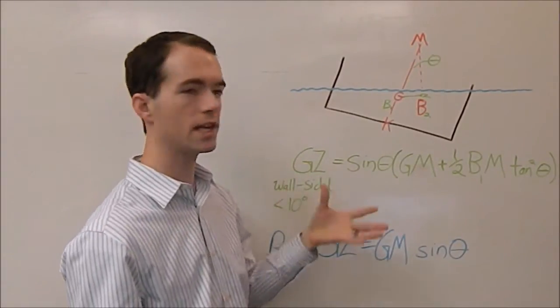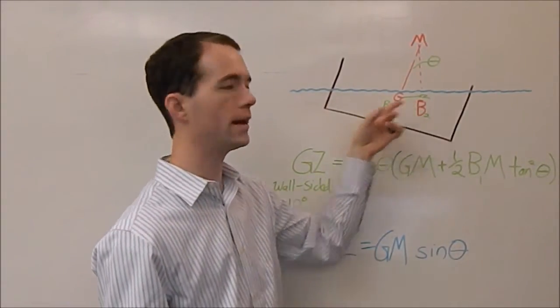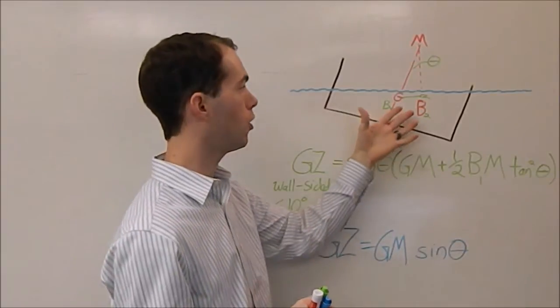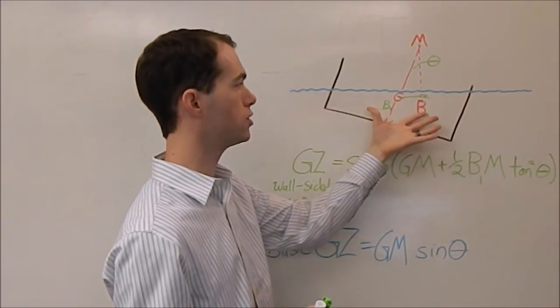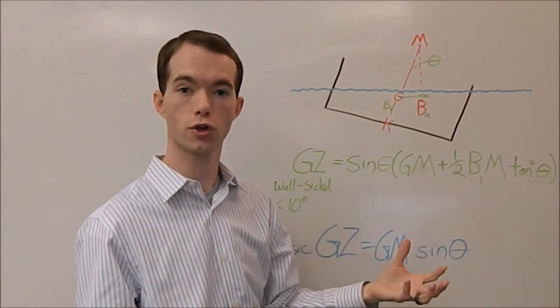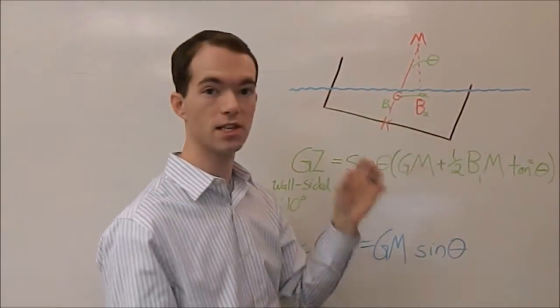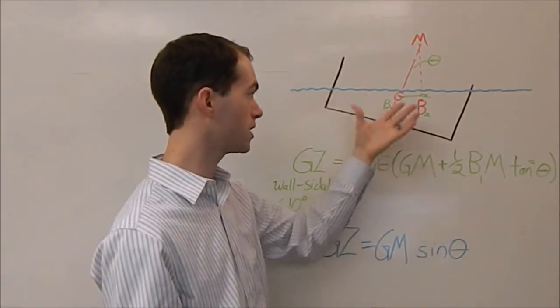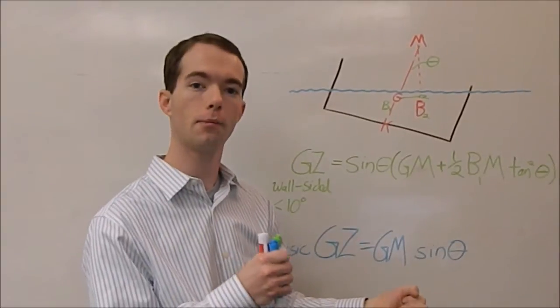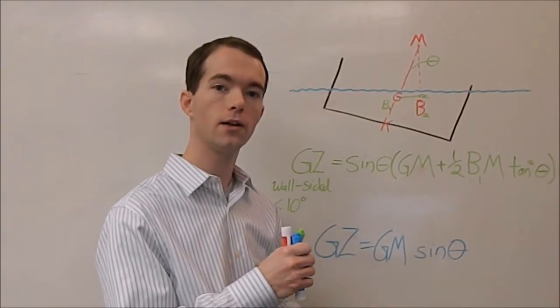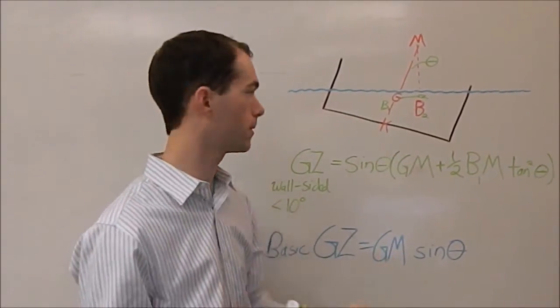This is simply a refinement over the basic GZ equals GM sine theta. So this is what's going to tell you what your riding arm is going to be. And if you know then what your displacement is, you know how much buoyant force you're going to have. You know at what distance that is, so that's going to create your torque, a force at a distance.